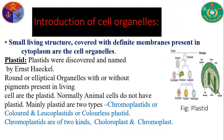A small living structure covered with a definite membrane present in the cytoplasm is called a cell organelle. Plastids were discovered and named by Ernst Haeckel. They are round or oval organelles with or without pigment present in living cells. Normally, animal cells don't have plastids. Plastids are of two types: chromoplastids (colored) and leucoplastids (colorless).